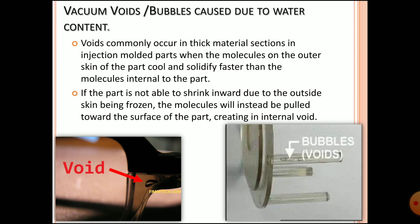Vacuum voids commonly occur in higher or thicker material sections. If you have a component with bigger wall thickness, these defects will definitely occur. During injection molding, molecules at the outer layer or outer skin cool faster than molecules at the center or middle area of the higher wall thickness. Due to this, the internal molecules are not able to cool fast enough, and thus voids are formed.